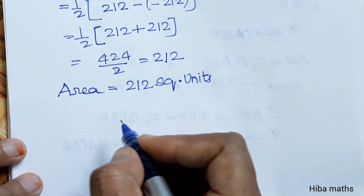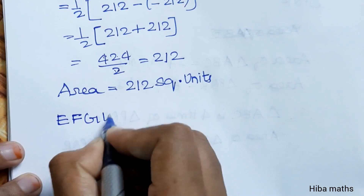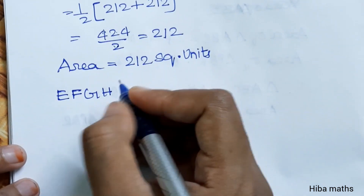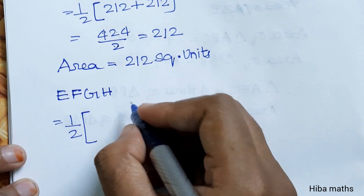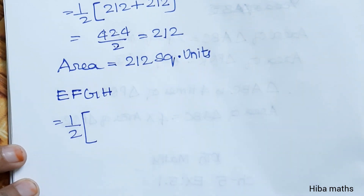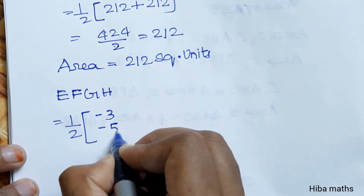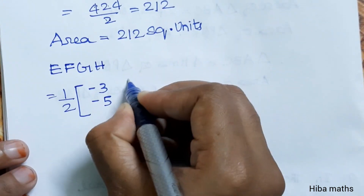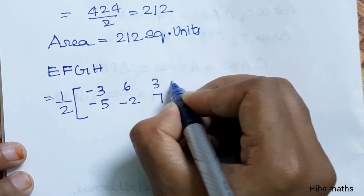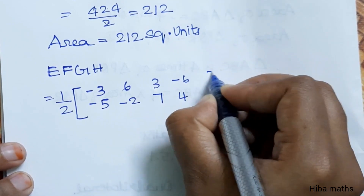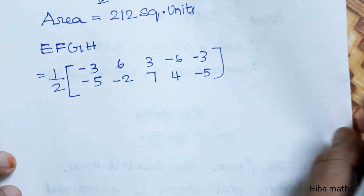Now we need to find the area of quadrilateral EFGH. Adding the formula with points E, F, G, H. The coordinates are: minus three, minus five; six, minus two; three, seven; minus six, four. Last point: minus three, minus five.